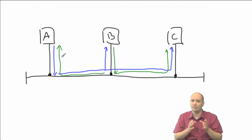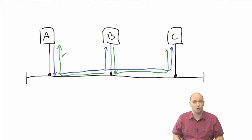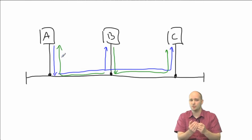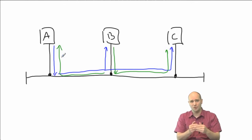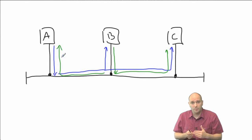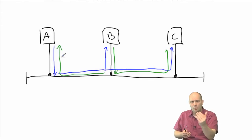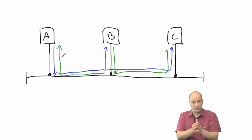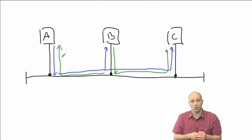In Ethernet, a technology called Carrier Sense Multiple Access with Collision Detection (CSMA/CD) is used to detect collisions. If two stations like A and B try to transmit at the same time, they will hear the other station transmitting, stop their own transmission, back off, and then wait for a random time. Only when there is silence on the shared cable will they start transmitting again.